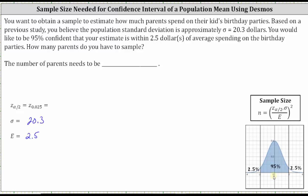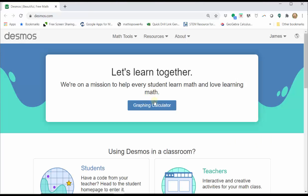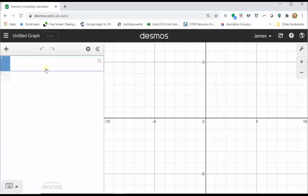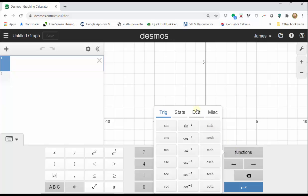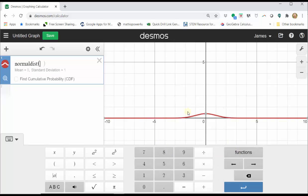Now let's find the z-score we need using Desmos. Click graphing calculator, click show keypad, click functions. Under the distributions menu, click normal distribution. Enter a mean of zero, comma, standard deviation of one, close parenthesis, period or decimal point, functions.